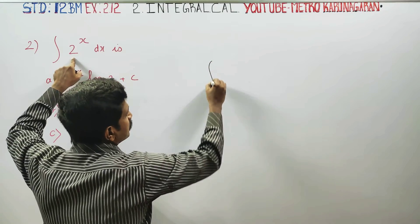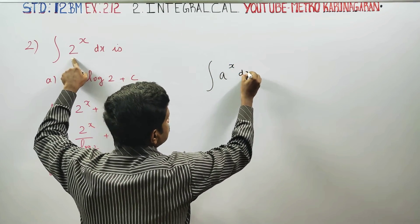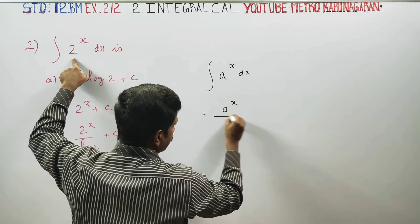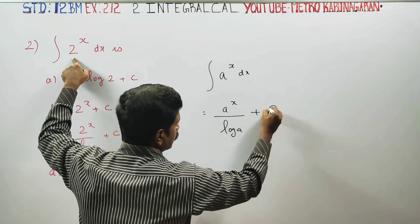Before doing this sum, there is a ready-made formula: a power x dx equals a power x by log a plus c. That is the formula.